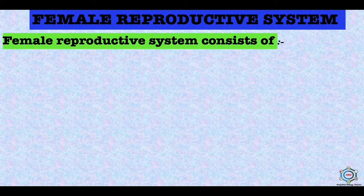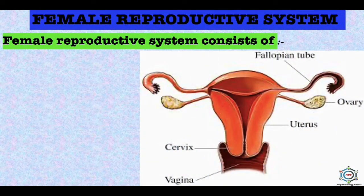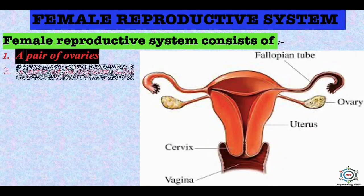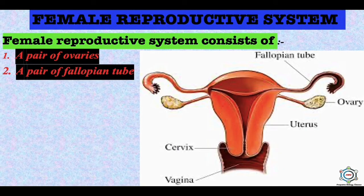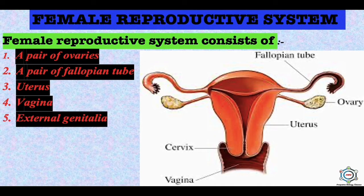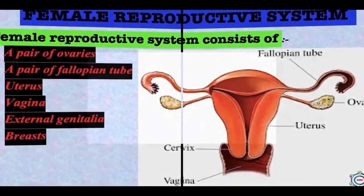Now the female reproductive system. It consists of a pair of ovaries, a pair of fallopian tubes, a uterus, a vagina, external genitalia and breasts. We will now discuss each part in detail.